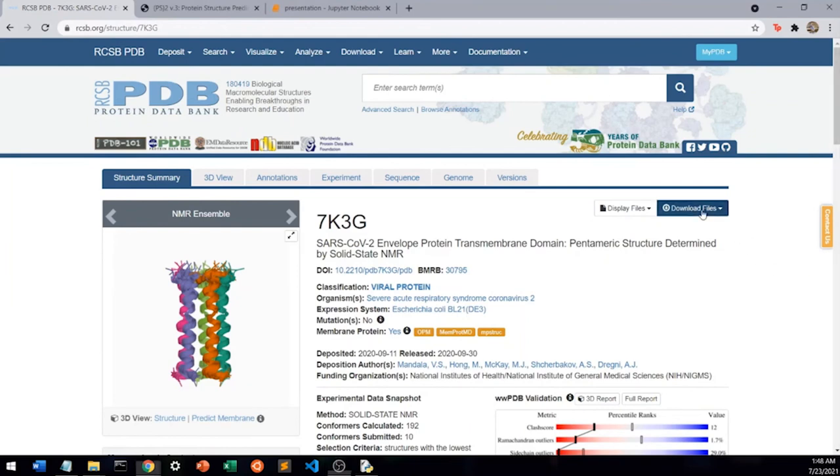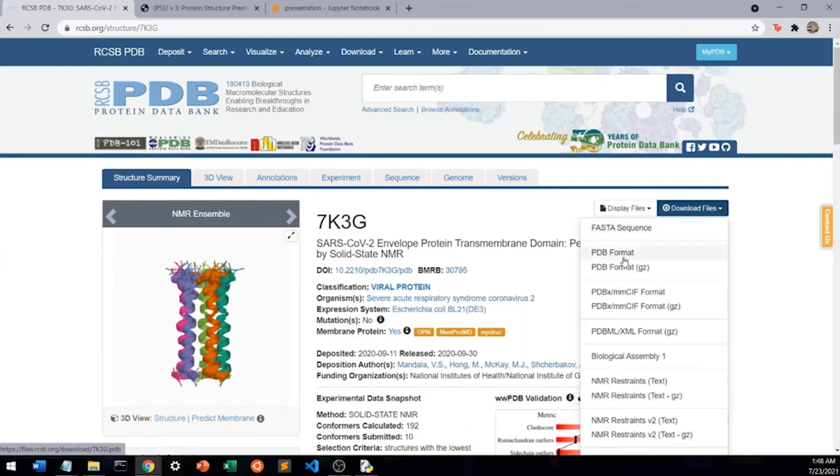We will download two files from here: first, the FASTA sequence, and next, the PDB file.